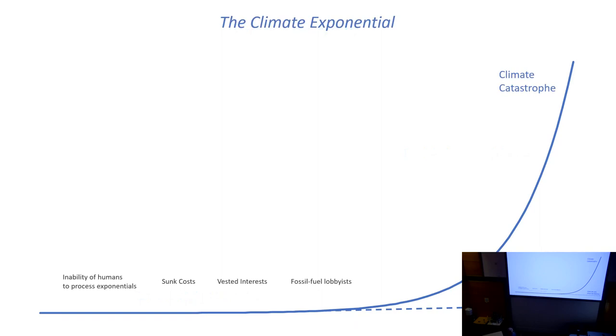There's no better case than the climate exponential we're living through now. Most of us still believe the dotted line is where we are. Intellectually we know otherwise, but intuitively we all act as if it's a dotted line, partly because we're conditioned - we don't understand exponentials as humans.